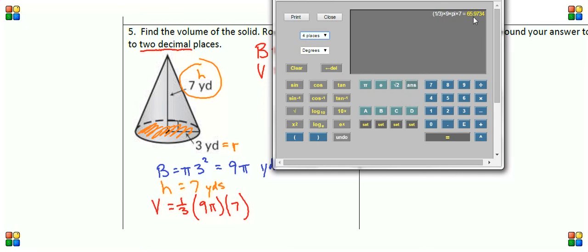We're going to round to two decimal places. The 3, this third decimal place, is lower than 5, so we don't have to round up. We just cut it off. And the answer is 65.97.